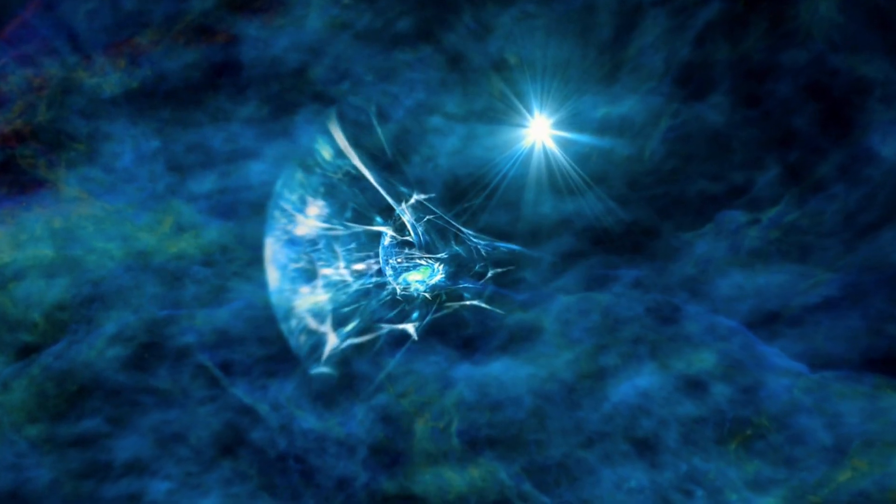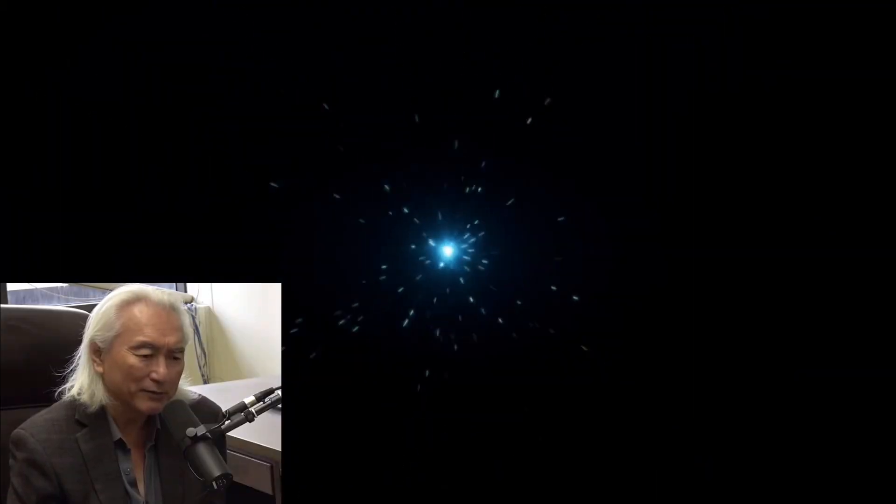The universe originated from a hot and dense point 13.7 billion years ago. It rapidly expanded, doubling in size over 90 times during its early stages. As matter formed and the universe cooled, a moment known as recombination occurred, where electrons combined with nuclei to form atoms, making the universe transparent.